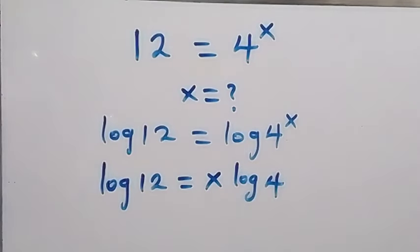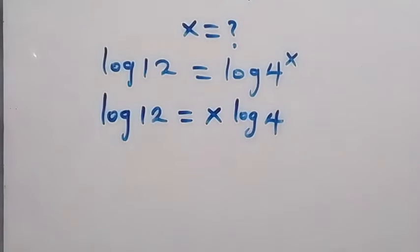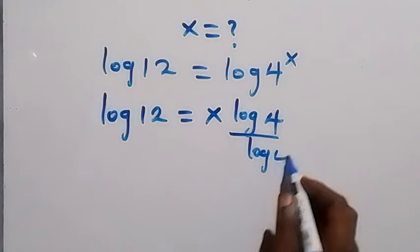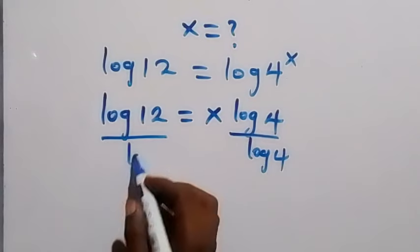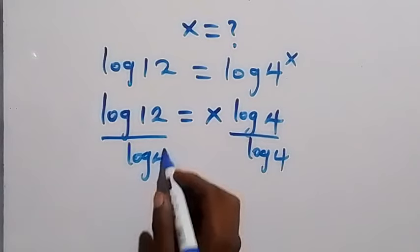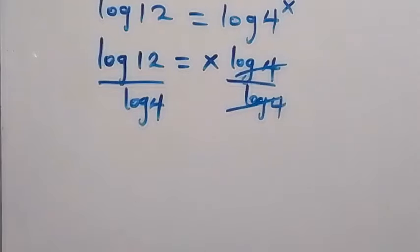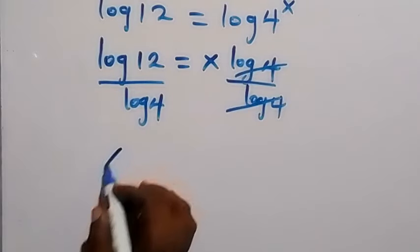Then in the next step we can divide both sides by log 4. Log 4 cancels log 4 here.